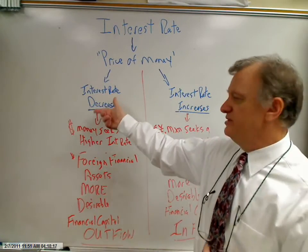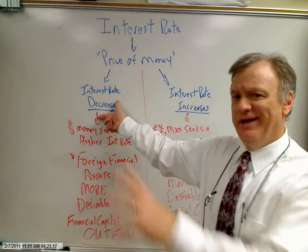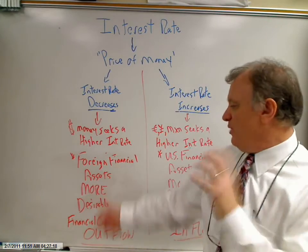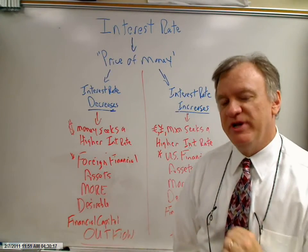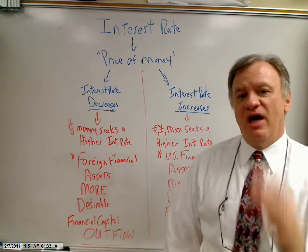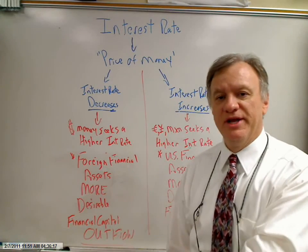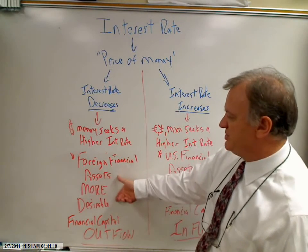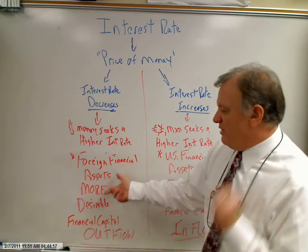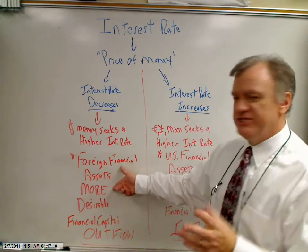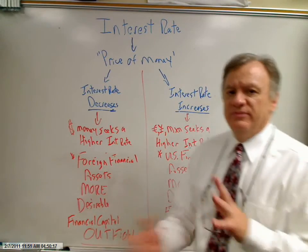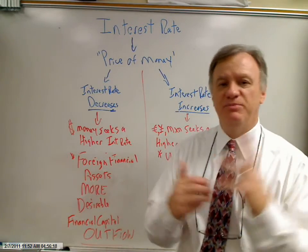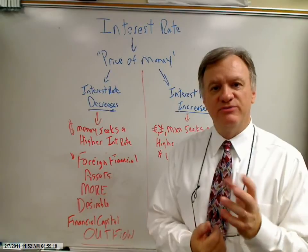When U.S. interest rates decrease relative to Europe, Japan, Mexico, or wherever, there's going to be an increase in demand for foreign financial assets — they become more desirable — and there'll be a financial capital outflow of dollars from the U.S. to the foreign exchange market. This is important: interest rate changes affect the desirability of the financial assets of a particular country. Next lesson, we're going to use this interest rate effect and show on basic supply and demand graphs how this is going to affect the value of the dollar in the foreign exchange market.